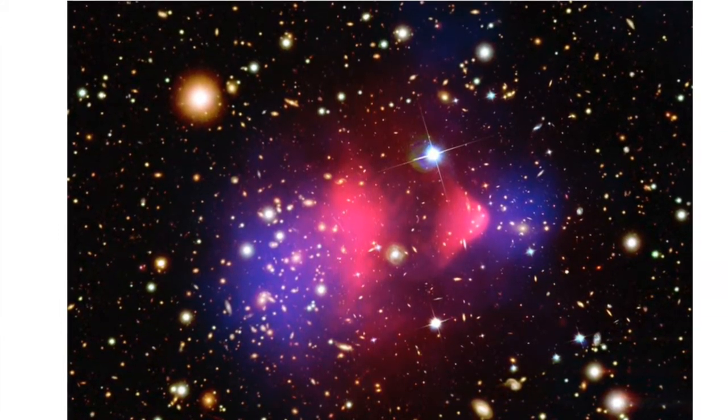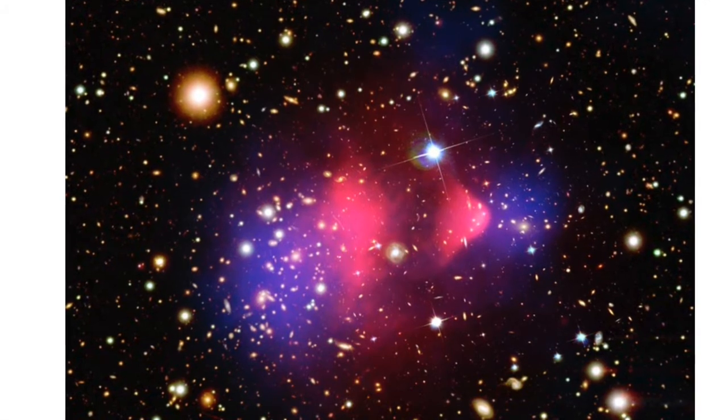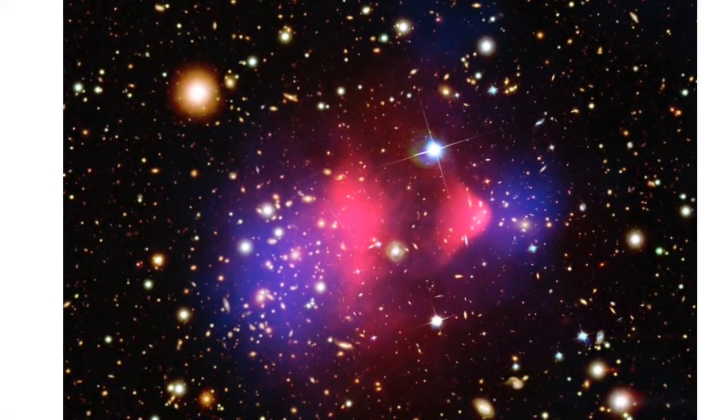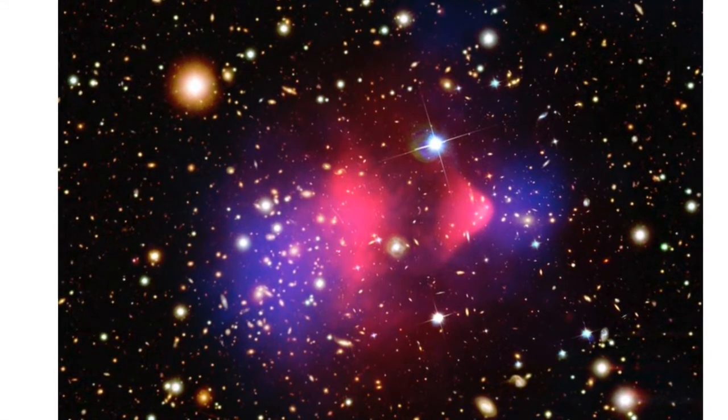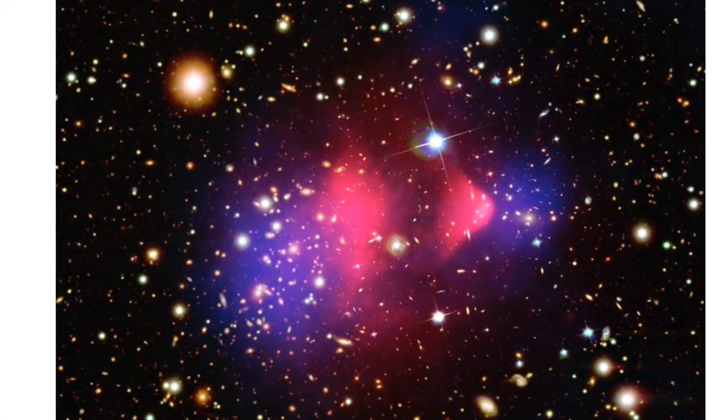In the picture below, the ordinary matter is colored pink. It is hot gas, imaged by the Chandra X-ray Observatory. The blue areas are where most of the mass in the cluster is found, the dark matter. The dark matter locations were determined by gravitational lensing of light from background galaxies.